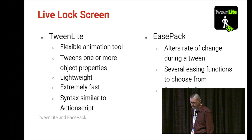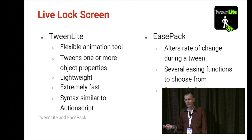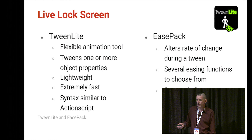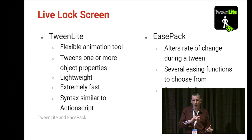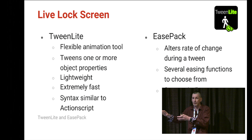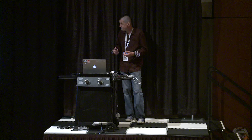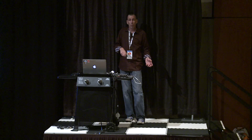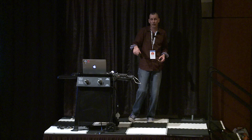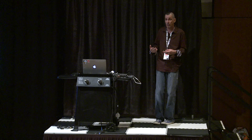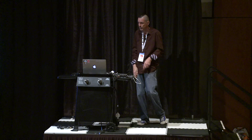TweenLite and EasePack from GreenSock provide smooth animations similar to what Android does in application development. TweenLite takes a couple of properties and tweens an object from one position to another over a specified time — you just say go from here to here in this time and it performs the animation. EasePack works in conjunction to smooth it out — instead of linear movement, it can ramp up speed, bounce, or stretch, making animations feel natural the way things move in real life.